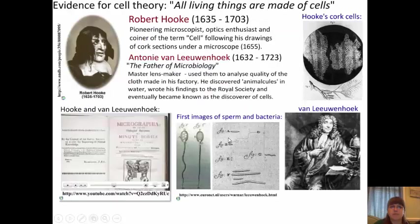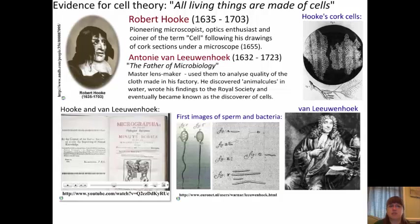A piece of evidence for cell theory: all living things are made of cells. We have two scientists who really led to this idea. Robert Hooke was a pioneering microscopist, an optics enthusiast, and he was the coiner of the term 'cell,' following his drawings of cork sections under a microscope. Here is an image of Hooke's drawing of the cork cells.